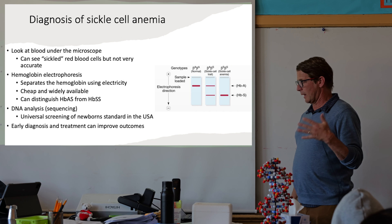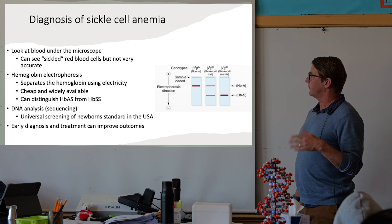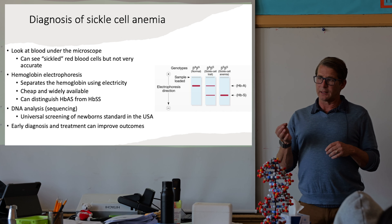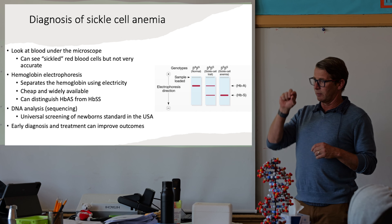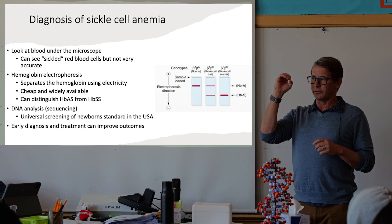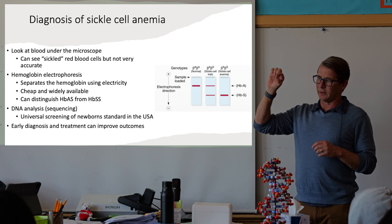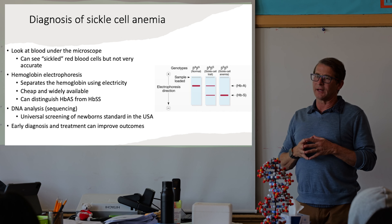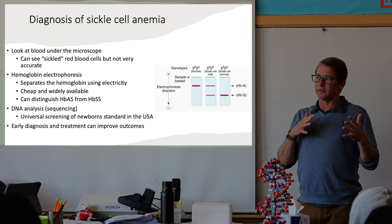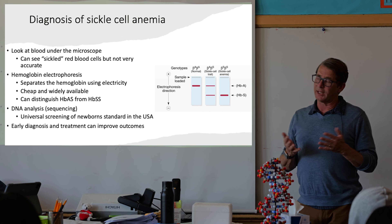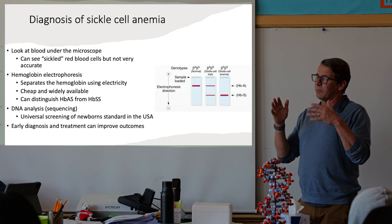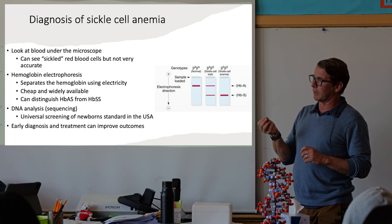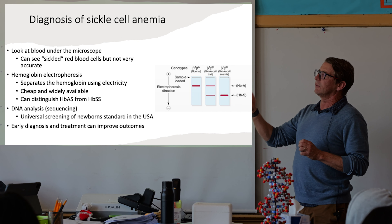Now briefly on how we diagnose sickle cell anemia. You can take blood from a patient and look at it under a microscope, and you're likely to see the characteristic sickle-shaped red blood cells. However, it's not a very accurate way to make the diagnosis because even people with sickle cell anemia can have red blood cells that look normal, especially if they're oxygenated. Other conditions can also cause unusual red blood cell shapes, so microscopy alone is generally not used to definitively diagnose sickle cell.